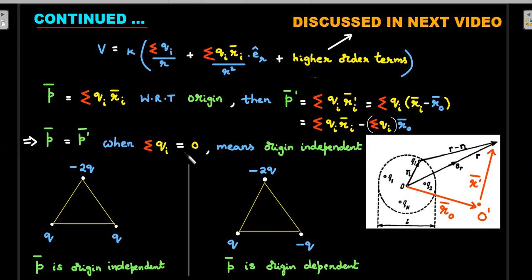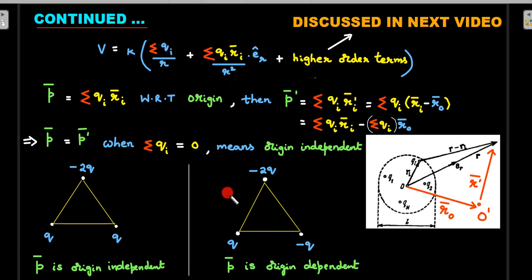Whenever the sum of charges of a system is zero — for example, a dipole with +q and −q — the dipole moment becomes origin-independent. I give two examples: a system of q, q, and −2q forming an equilateral triangle has net charge zero, so p̄ is origin-independent. In contrast, a similar-looking system where one q is changed to −q has non-zero net charge — dipole moment is still defined, but different origins give different values.